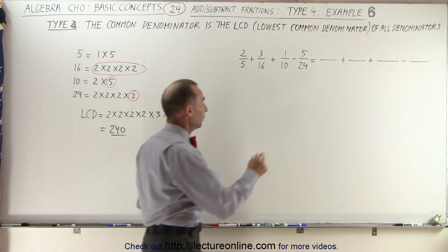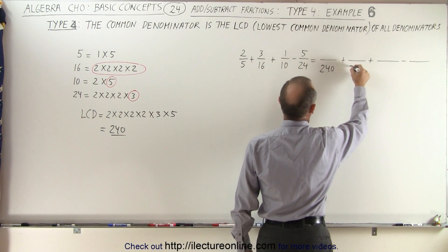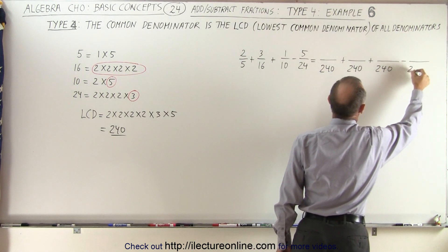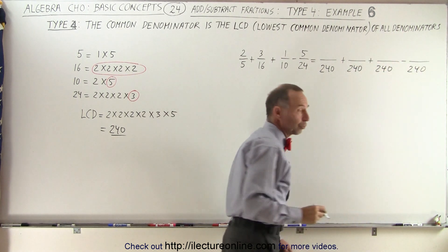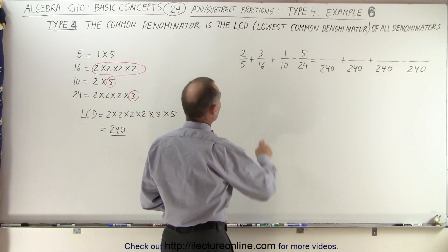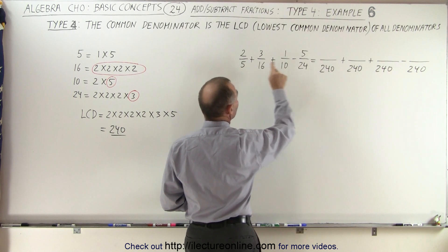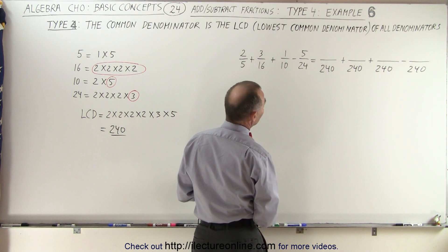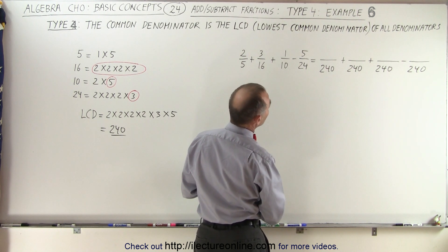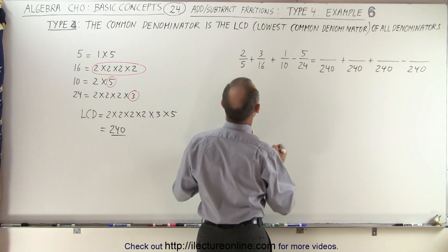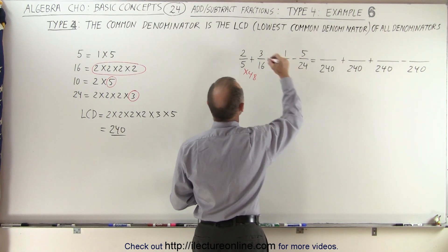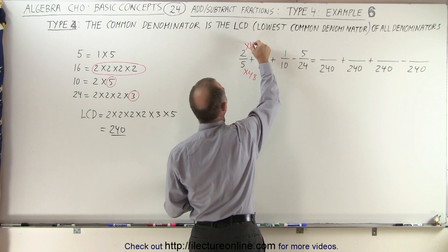We'll work with 240 as the new common denominator. Now we need to find the corresponding numerators. We ask: what do we multiply 5 by to get 240? Five goes into 240 forty-eight times, so I had to multiply 5 by 48 to get 240, which means I must multiply the numerator by 48 as well.